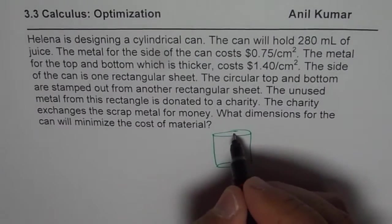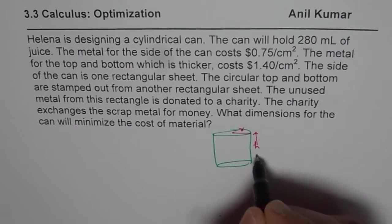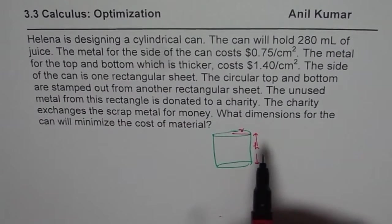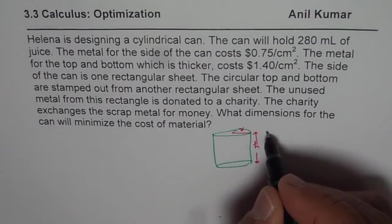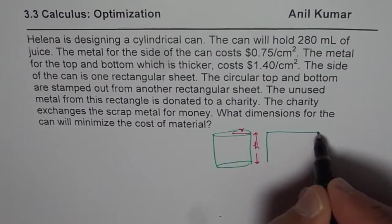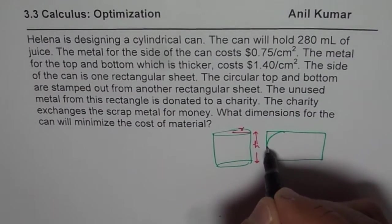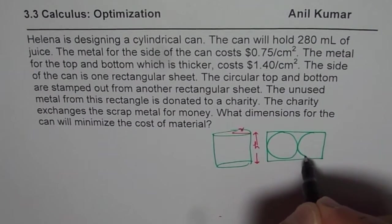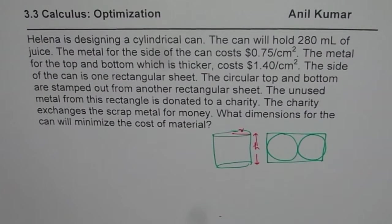And let us assume this radius to be R and H to be the height of this can. Now it has top and bottom which is coming out from one rectangular sheet which is thicker. So what we will do is we will make a thicker sheet. Let us say this is the thicker sheet for us from which you take out two circles.